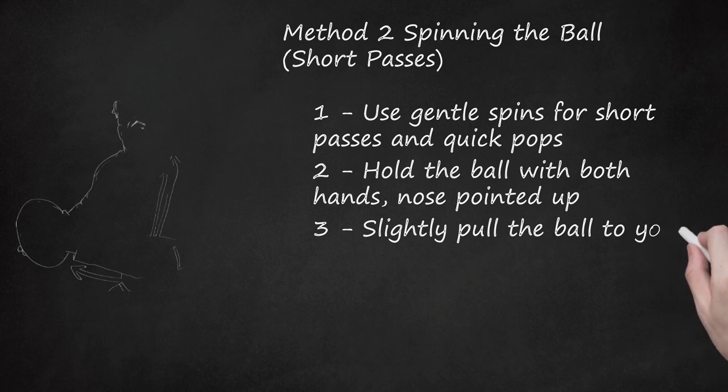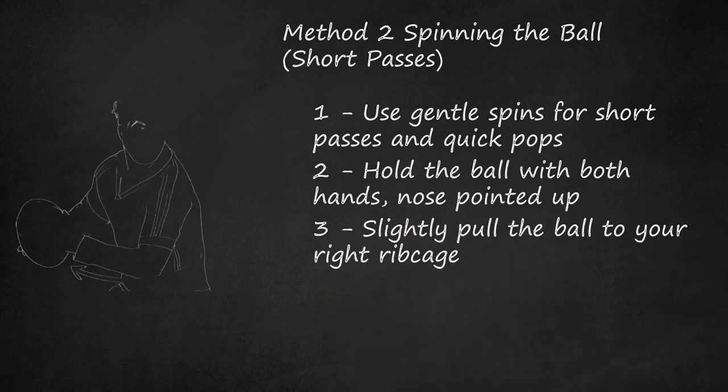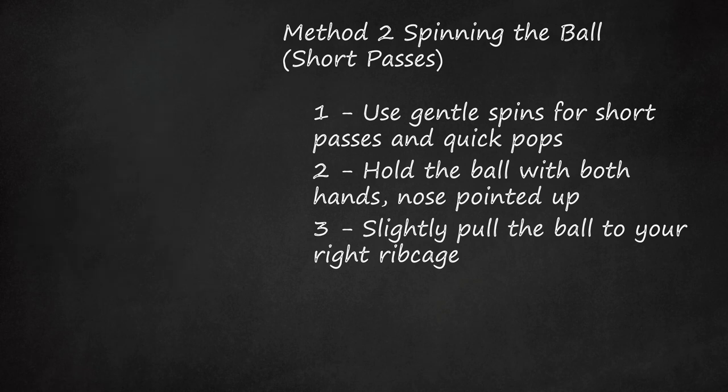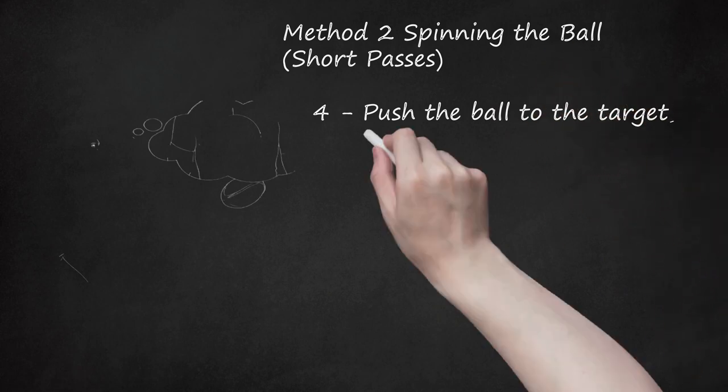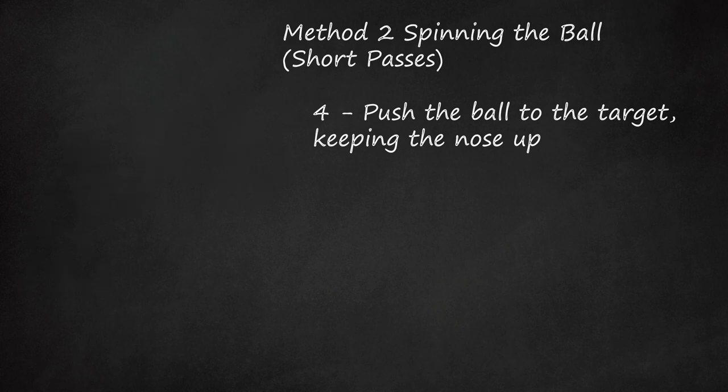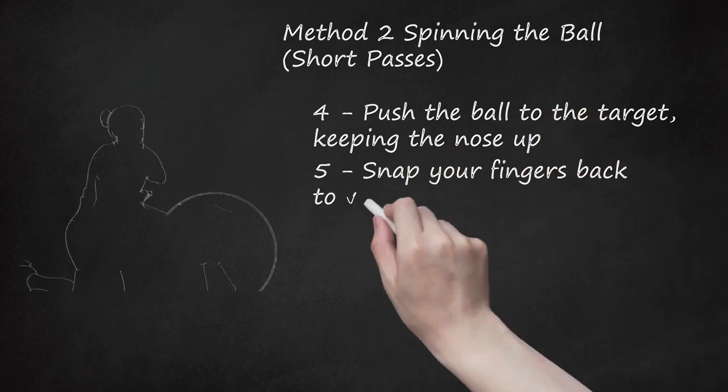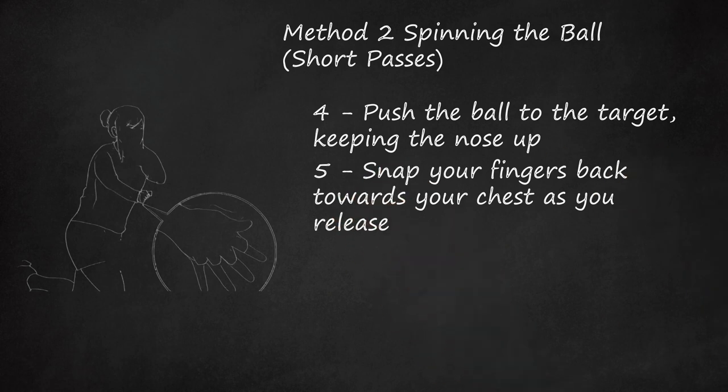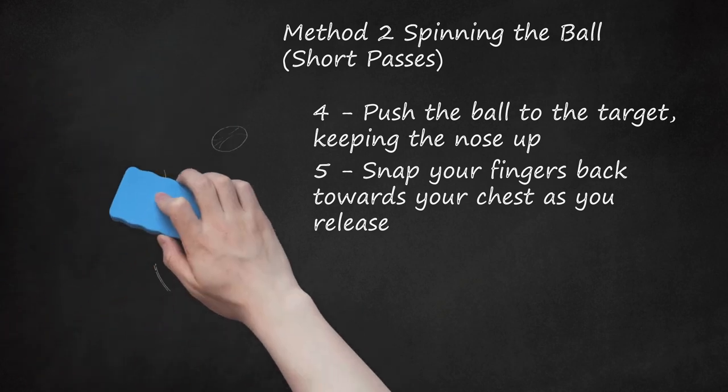Slightly pull the ball to your right ribcage. If you're throwing with your right hand, you'll be pushing the ball to your left. Cock the ball back slightly to get a little extra power by pulling the ball over to your ribcage. Push the ball to the target, keeping the nose up. You're aiming for your teammate's chest. Push the ball out towards them with your right hand. Snap your fingers back towards your chest as you release. As the ball leaves, pull your fingers back towards you, as if you were gripping a bar on a subway or train. This puts the spin on the ball. You can also work on snapping your left thumb forward, spinning the ball clockwise as you release.